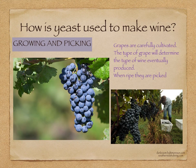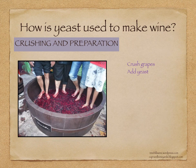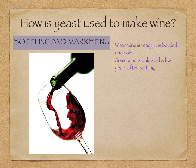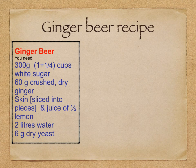Yeast is also used to make wine. The grapes are carefully cultivated, and the type of grape will determine the type of wine eventually produced. When the grapes are ripe, they are picked. The grapes are then crushed — this can be done by people treading on them, but nowadays it's done by machines, although some believe the flavors are lost without the feet involved. Yeast and other microorganisms are then added, and these feed on the sugars in the grapes and produce the alcohol. Grapes and yeast are left in large vats made of wood or stainless steel for months. Finally, when the wine is ready, it is bottled and sold. Some wine is only sold a few years after bottling.